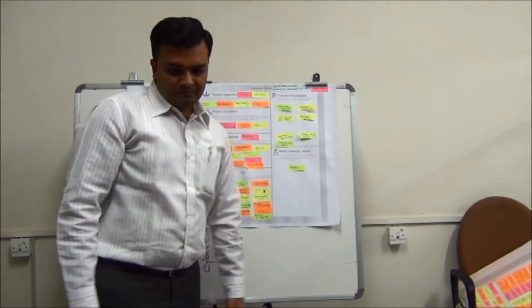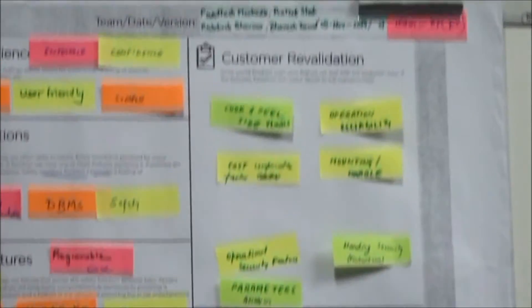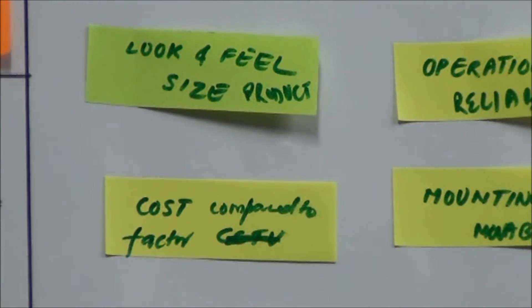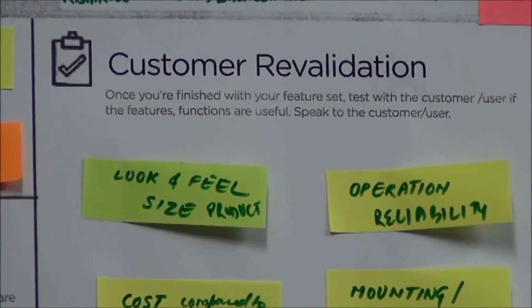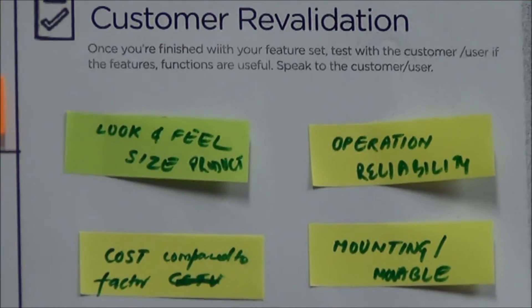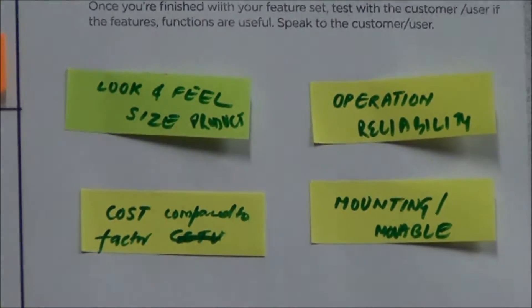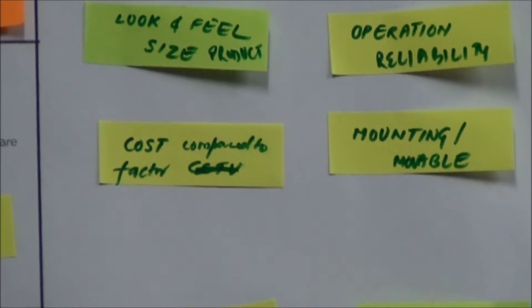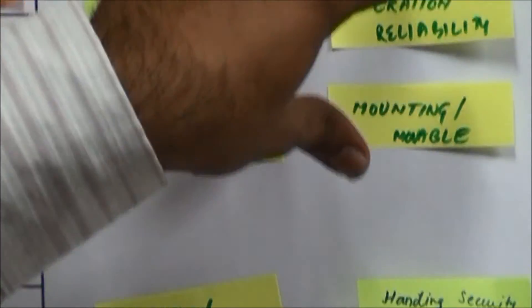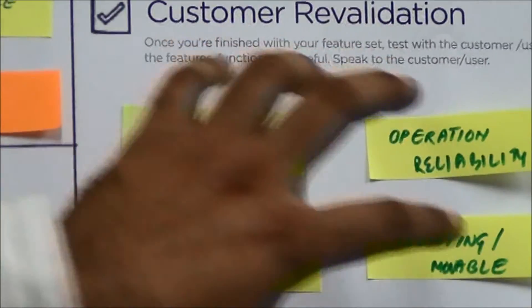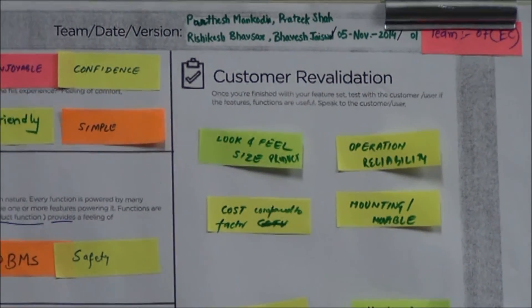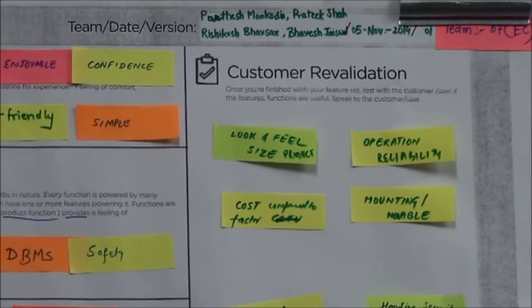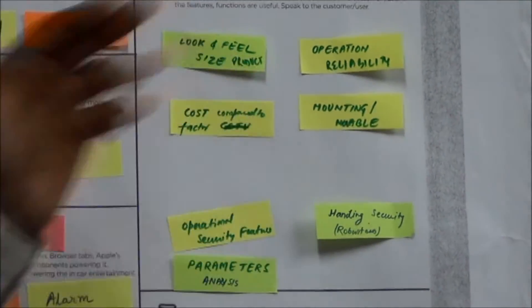Next is customer revalidation. In this canvas, you are dealing with product development ideas from the second canvas. Once you are going to develop this product, as a customer, what are the requirements, and what will they feel once the product is designed? For example, what will be the look and size of the product, whether it will be cost-effective, portable, or fixed somewhere. These are some of the revalidation features.